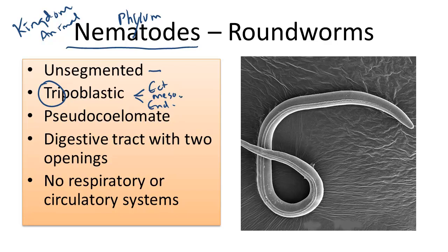They are pseudocoelomates. Pseudo meaning fake, coelom referring to a body cavity. So they have a partially lined body cavity forming in early embryonic development that can develop into more complex body systems.